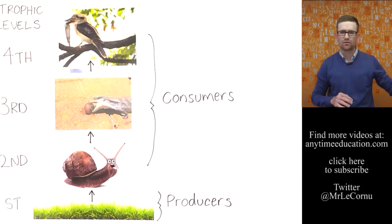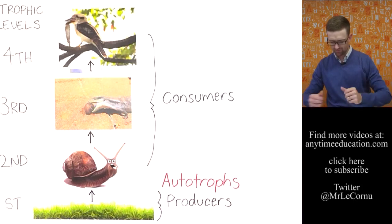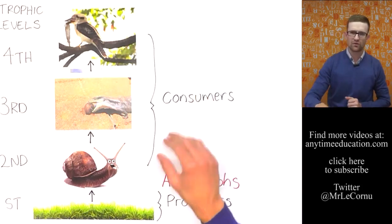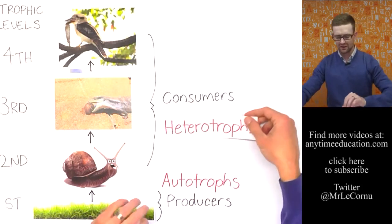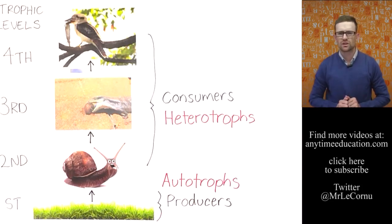Another name for producers is autotrophs and another name for consumers is heterotrophs. Let's have a look at what those terms actually mean.